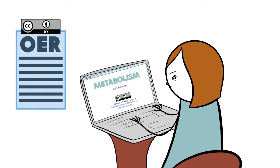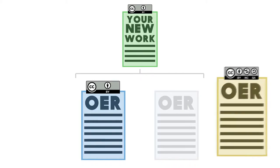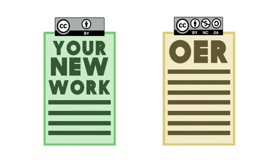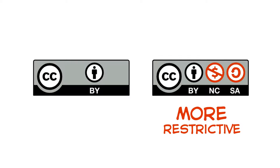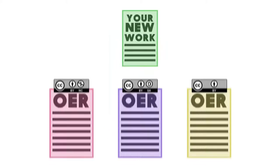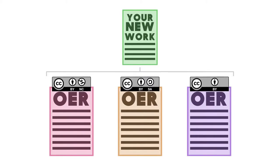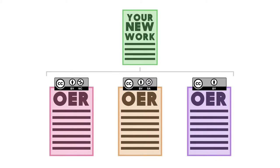Michelle used the BY license, which made licensing her new work easy. But not all licenses play well with others. Let's consider some situations where the licenses being combined are more restrictive. Suppose you are developing a work and you want to use some other CC licensed works within yours. If you adapt or derive works offered under Creative Commons licenses, you must not only follow the terms of the licenses involved, but also choose a license for your work that is compatible with the licenses of the works you are using.